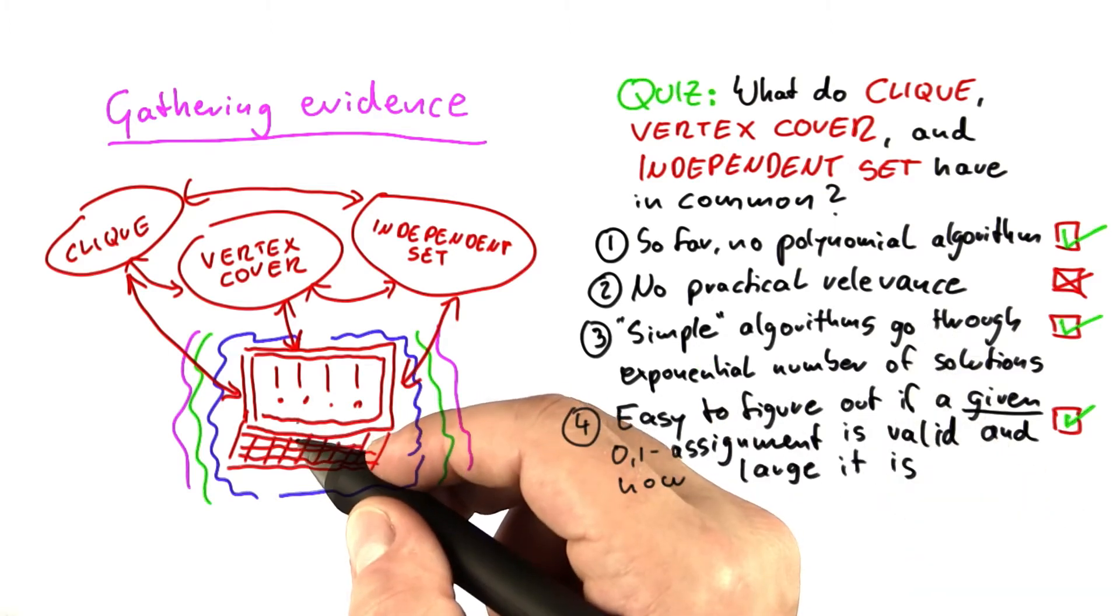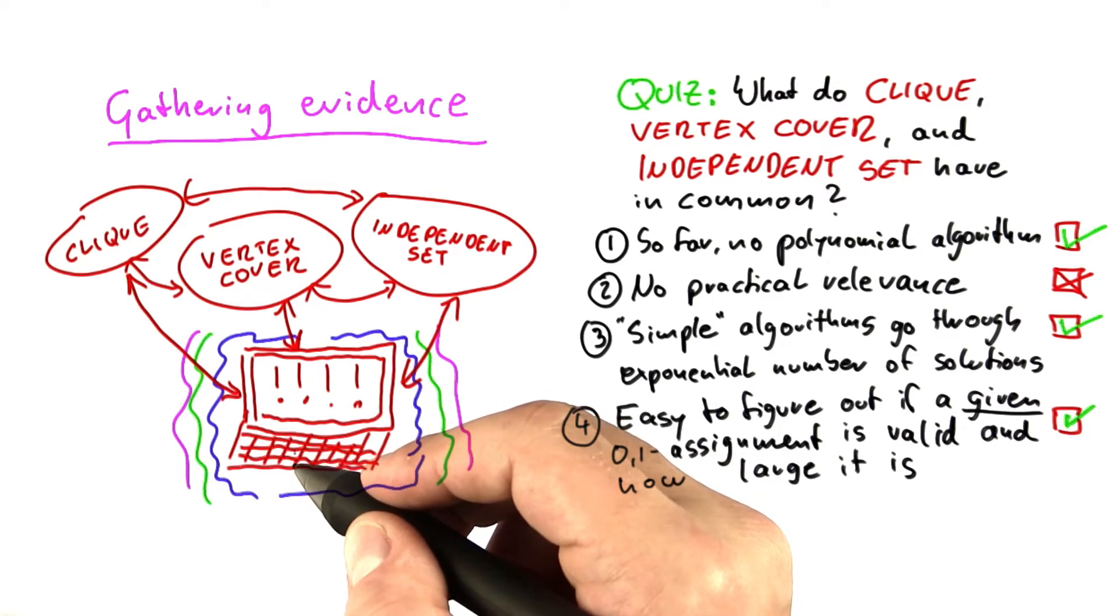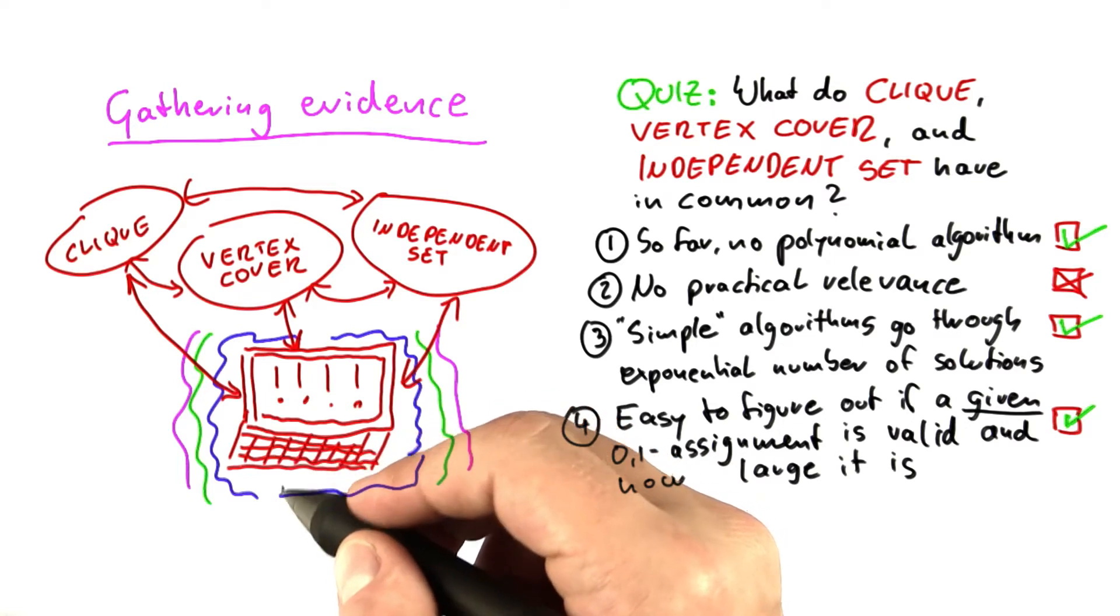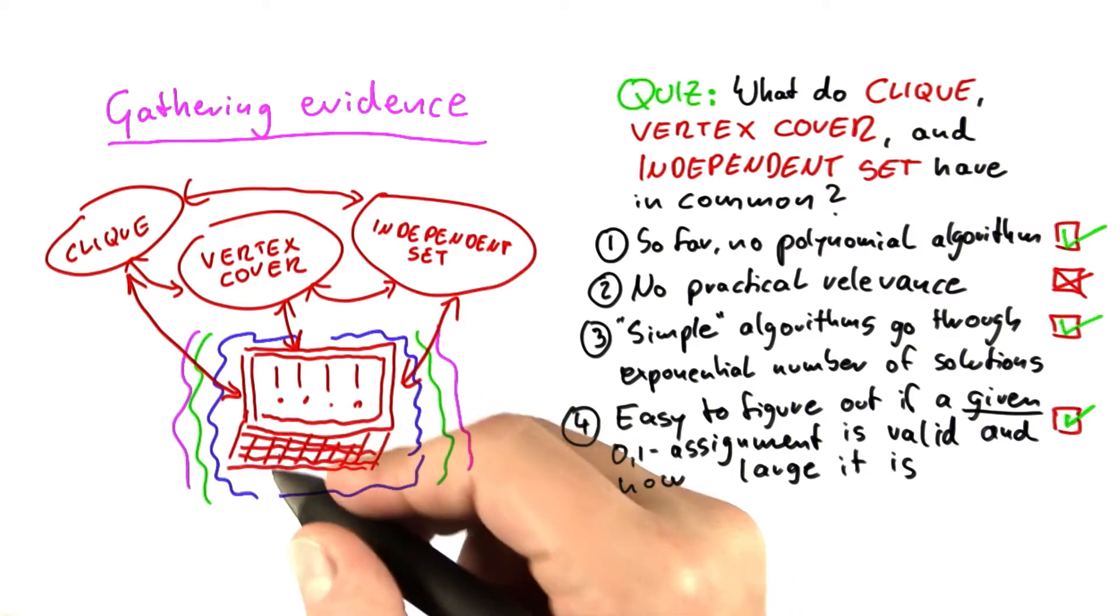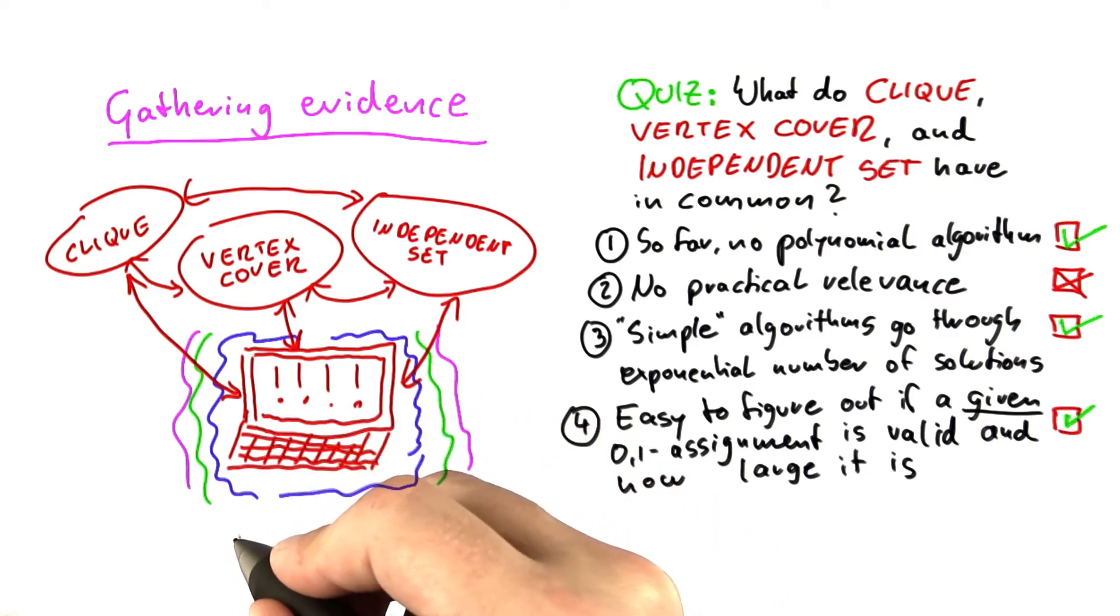The way this computer can help us is that it has a special instruction that a normal computer or even the RAM model does not have. That instruction is called if better, and I'm going to explain to you in a second what that means.